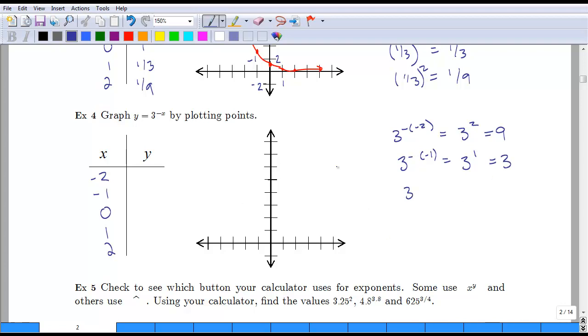Continuing, we get three to the negative zero, which is just zero, and anything to the zero power is one. Three to the negative, and we're plugging in one, so this is really three to the negative one, which is one-third. And likewise, if you end up with three to the negative two, you would flip this over, so it would be one over three squared, which is one-ninth.